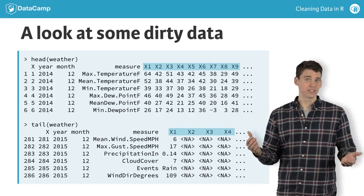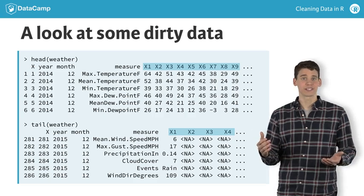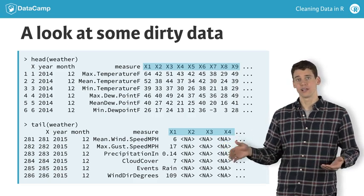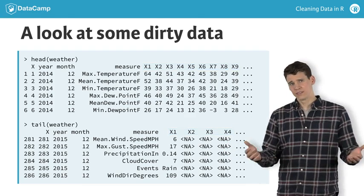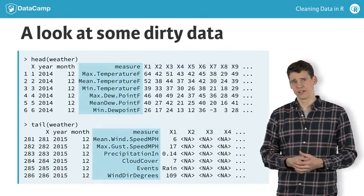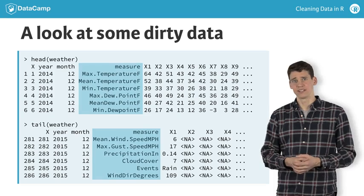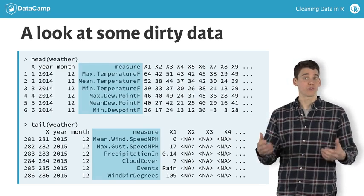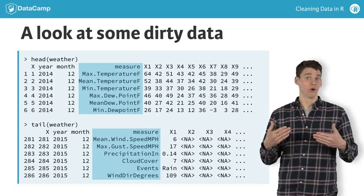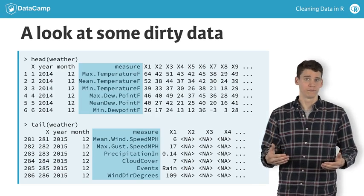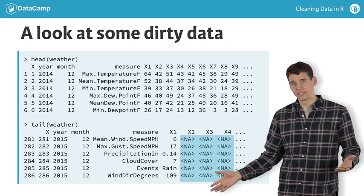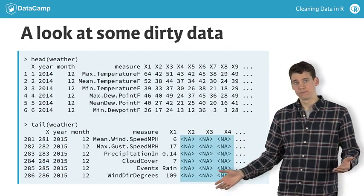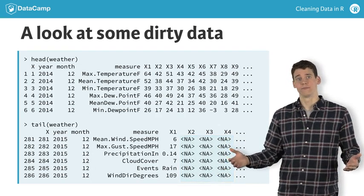And if they represent days of the month, then we've got time represented in both rows and columns. The different types of measurements contained in the measure column should probably each have their own column. There are a bunch of NAs at the bottom of the data, and the list goes on.